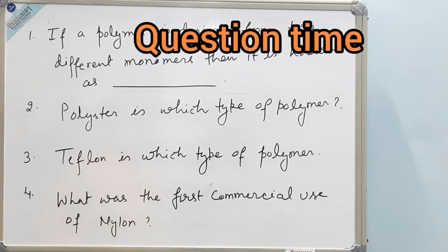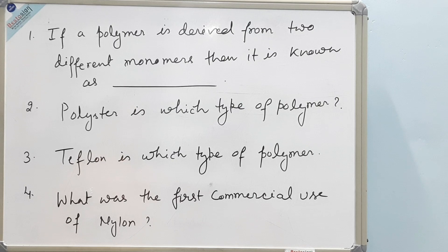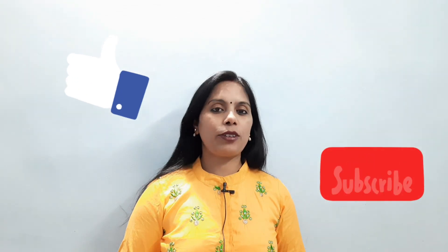Here are some questions — please answer them in the comment section. First: if a polymer is derived from two different monomers, then it is known as what? Second: polyester is which type of polymer? Third: Teflon is which type of polymer? And fourth: what was the first commercial use of nylon? I hope you have got some idea about polymers — please don't forget to like and subscribe. Thanks for watching.